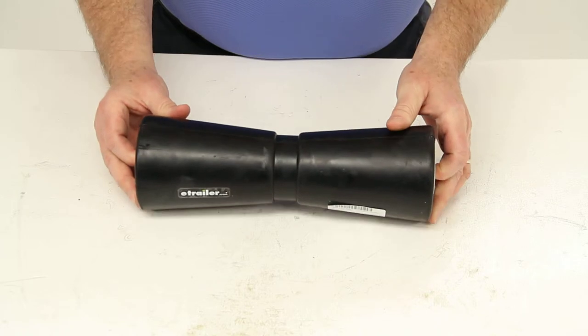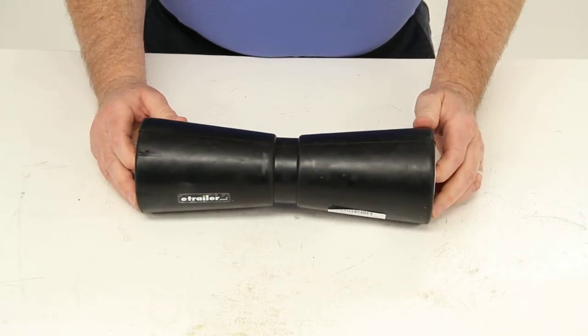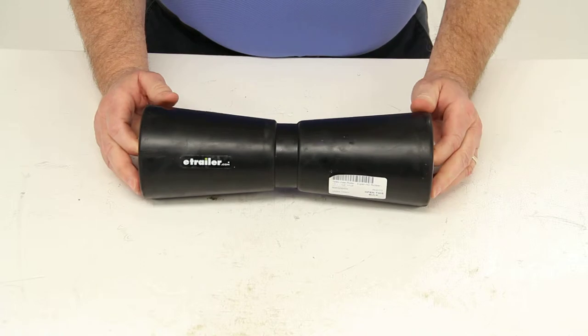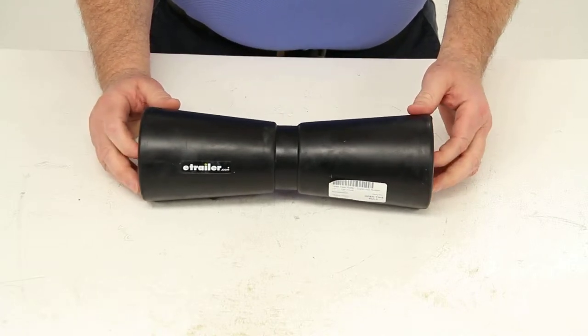This will replace one keel roller on your boat trailer that uses a standard 12-inch wide bracket with a 5/8-inch diameter shaft.